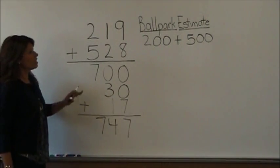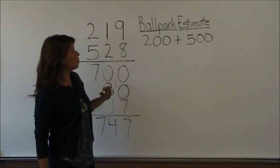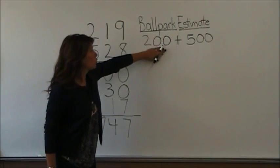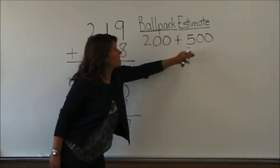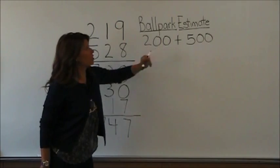Seven hundred and forty-seven. Let's check our work using our ballpark estimate. Two hundred plus five hundred is seven hundred. Our answers are very close.